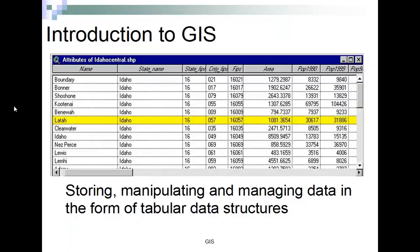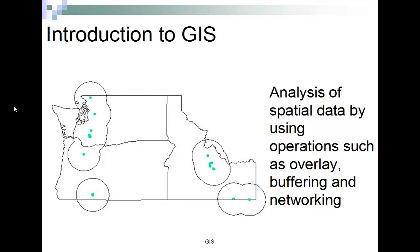Typically with GIS, we store, manipulate, and manage data in the form of tabular data structures — like Excel or any spreadsheet management system. With GIS, we can also do things like overlay, buffering, and networking. Here are some volcanic features in the Pacific Northwest, and we're making a buffer area around them to see areas that should be evacuated first in the event of an eruption.